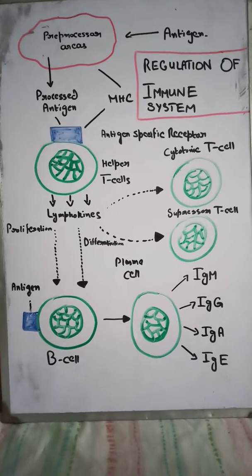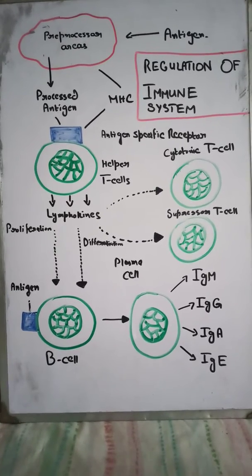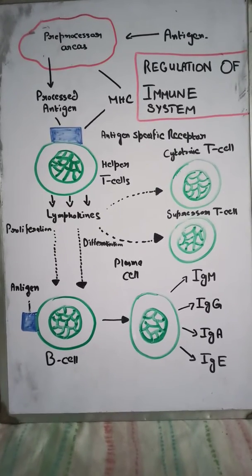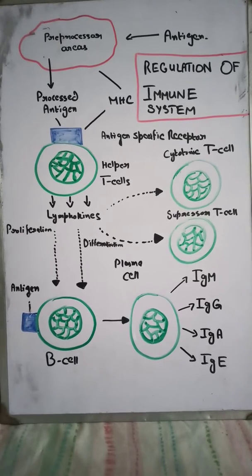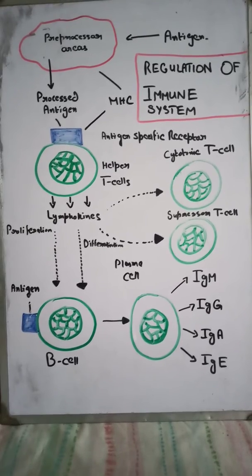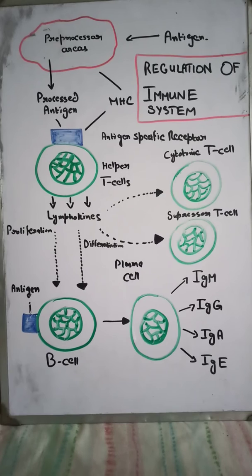Cytotoxic T-cells have a different role. While helper T-cells bind only to the processed antigen, cytotoxic T-cells secrete hole-forming proteins called perforins.